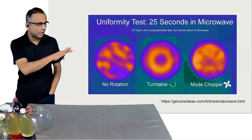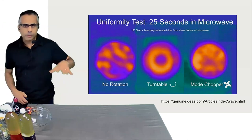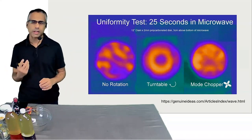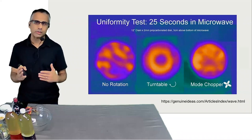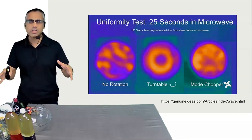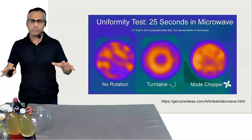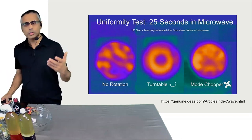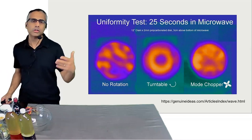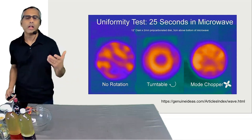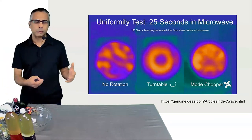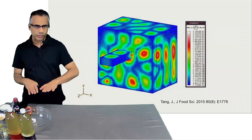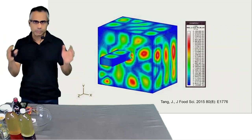Some microwaves have what's known as a mode chopper — a fan blade that deflects the microwaves so they bounce around the chamber more, giving more even heat distribution. Regardless of which microwave you have, make sure you understand how it heats water and use that fact to heat your food more efficiently. The waveguide — the tube that the microwave comes out of — is what sticks out inside the chamber.